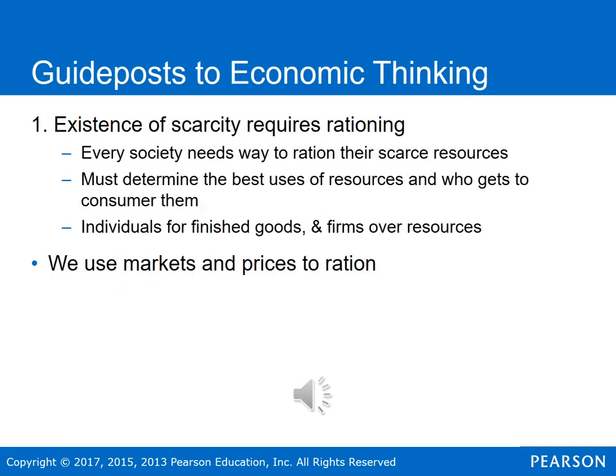Because of the existence of scarcity, societies are required to somehow ration goods and services. Every society needs a method to ration scarce resources and determine their best usage — some metric to determine the best uses and who is able to consume them. For individuals, we're talking about finished goods; for firms, we're talking about resources and intermediate goods used in production to produce goods that consumers will eventually consume.